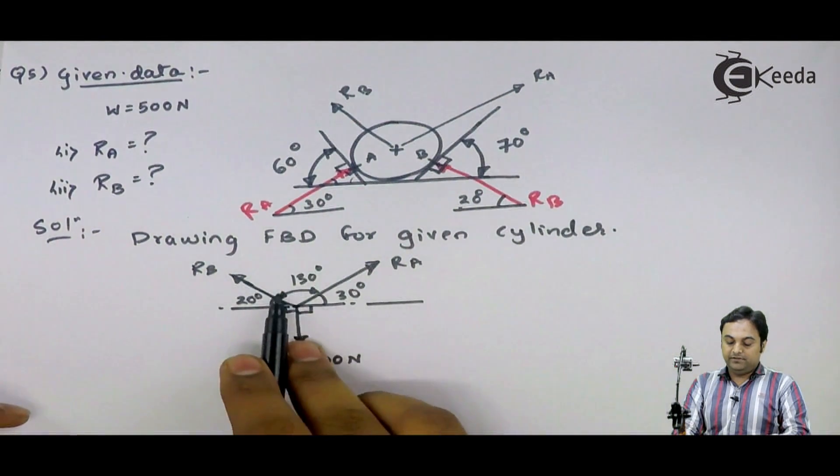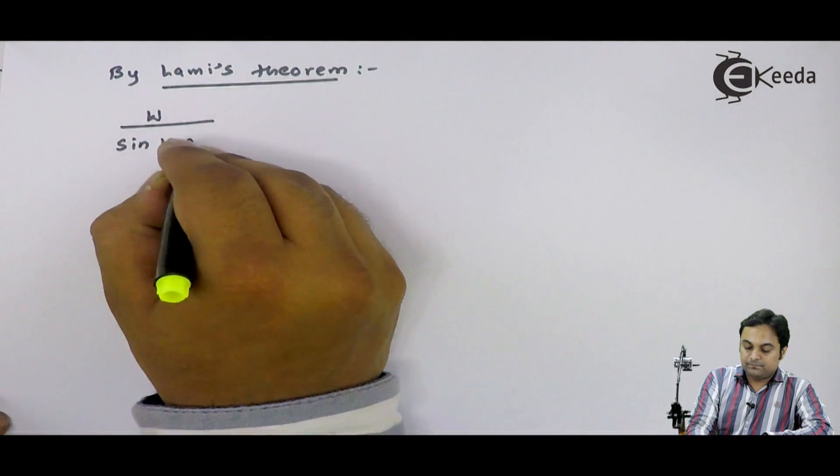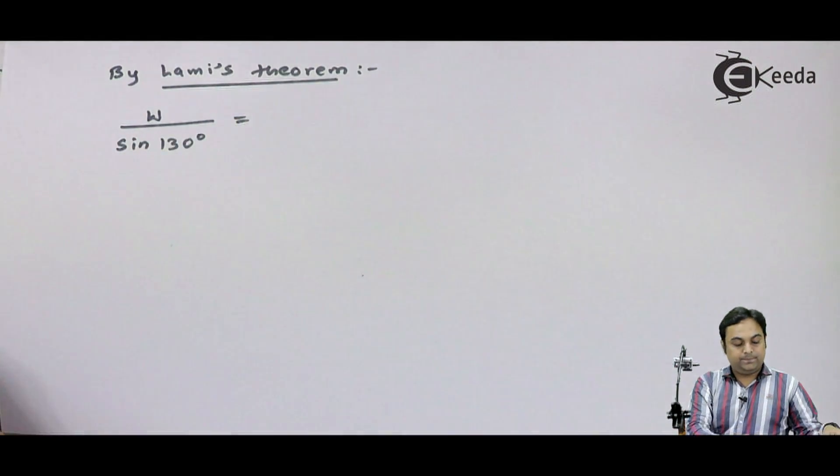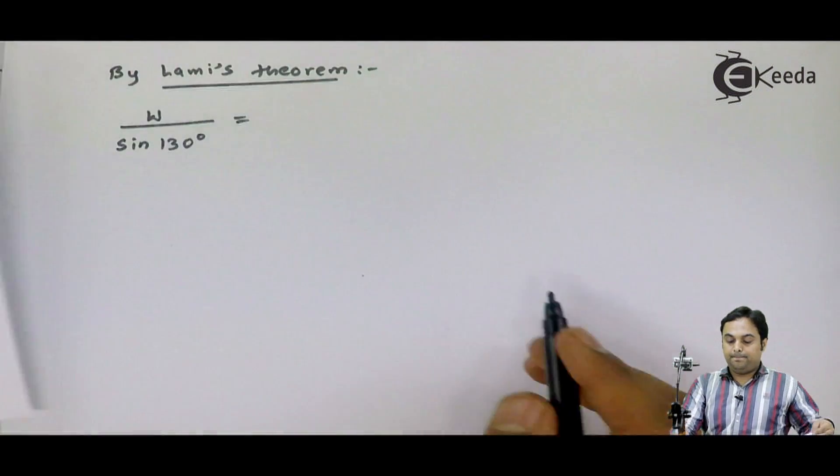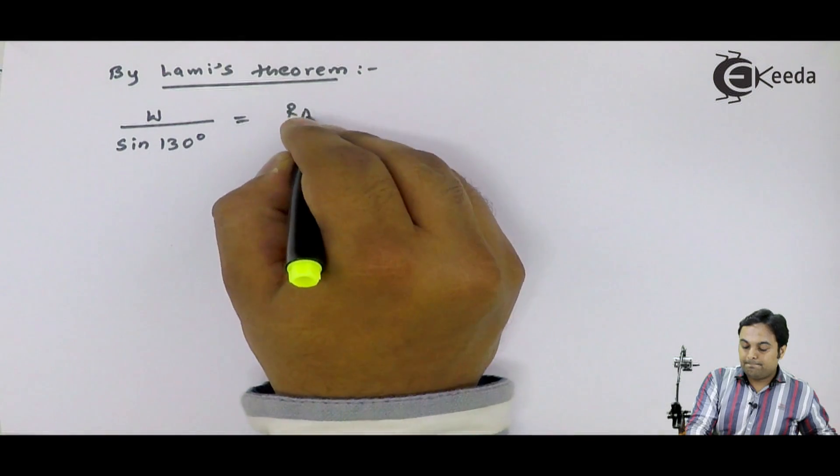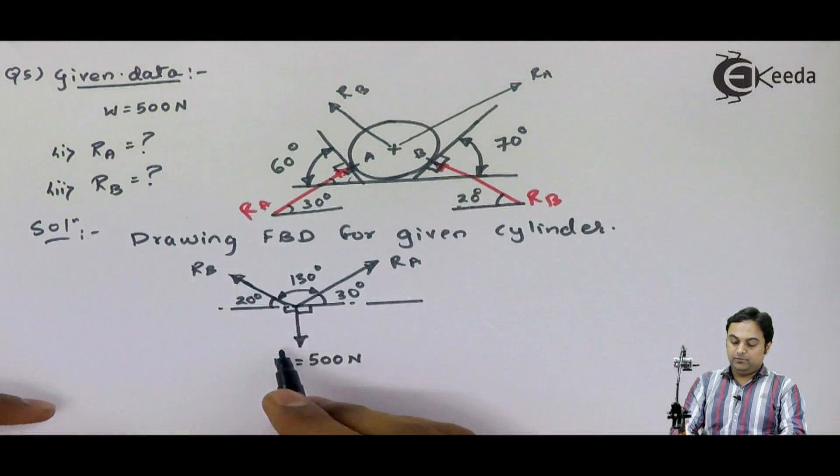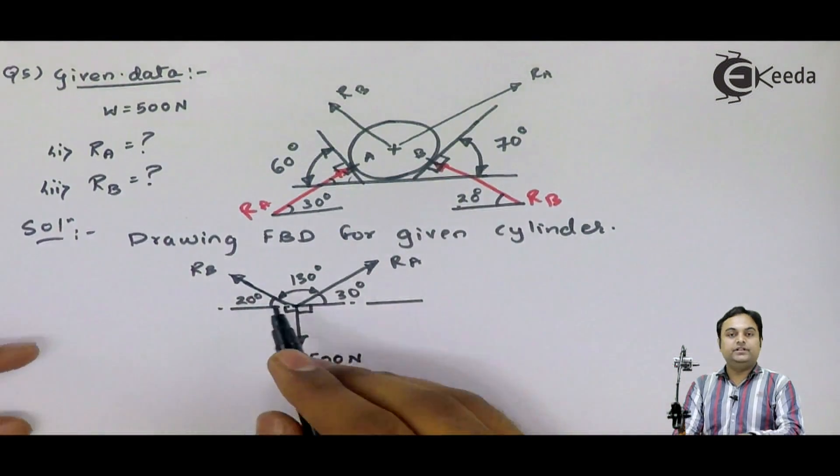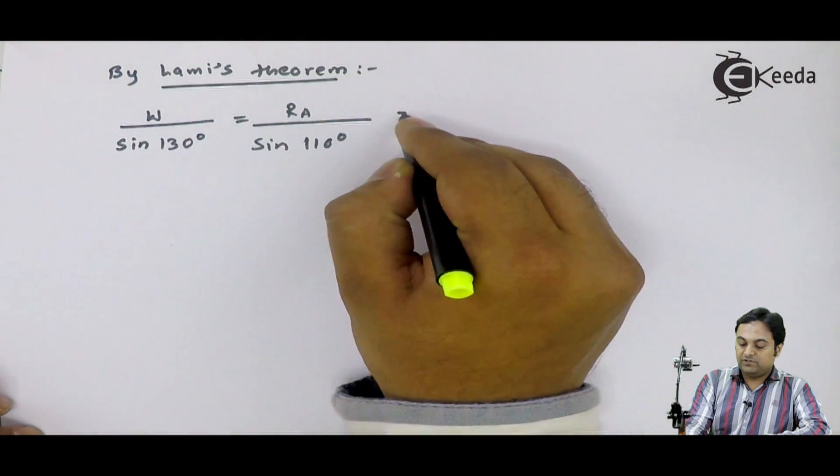Is equal to, next I will take RA, RA upon sin of angle between W and RB. W and RB, it is 90 plus 20, which is 110. After this, I will write down RB and sin of angle between W and RA.